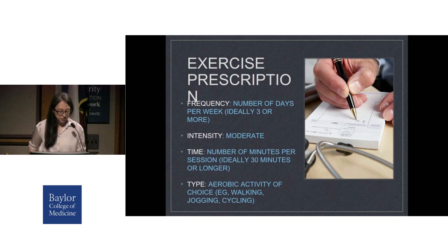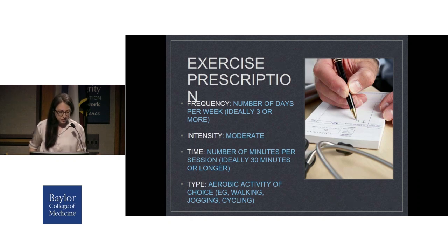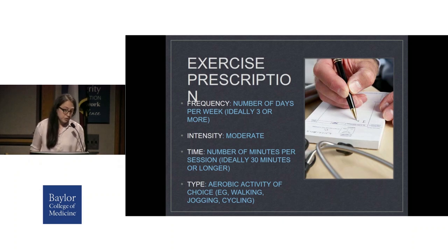Studies have shown that continuous and accumulated exercise produces comparable effects on fitness, so a 30-minute versus a 60-minute bout can be considered — whichever works best for your schedule. The type is the aerobic exercise of your choice. Walking is typically the most accessible and easiest to start for beginner exercisers, but it can be a wide range of things that suit your interests and routine.